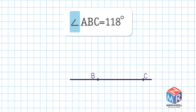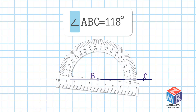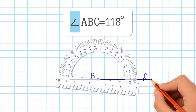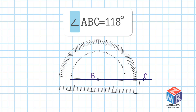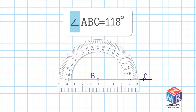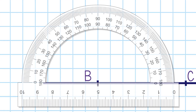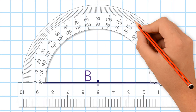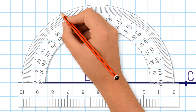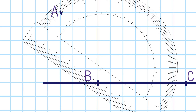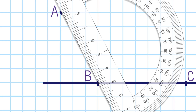Mark the points B and C on it. Place the center point of the protractor on point B. Align Ray BC with the zero mark on the protractor. Hold the protractor firmly. Count up from zero to 118 degrees. It is point A. Use the straight edge of the protractor to draw the ray BA.